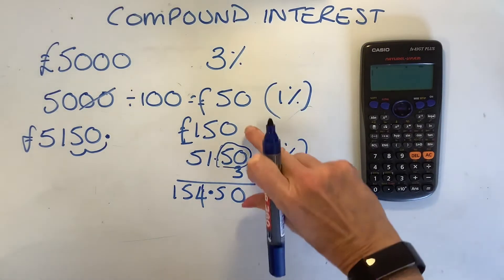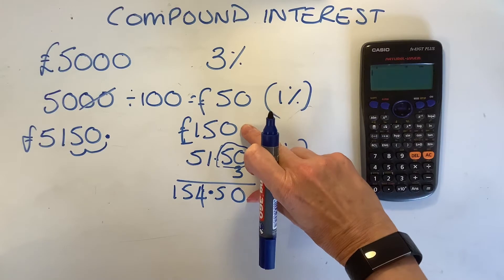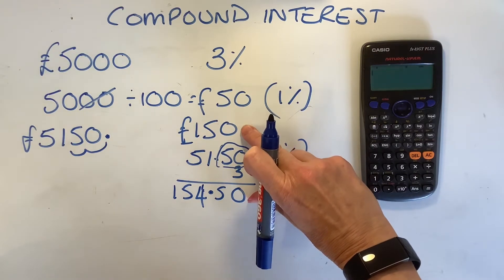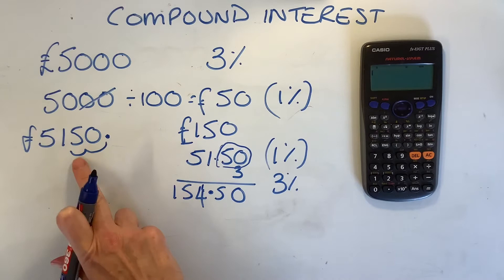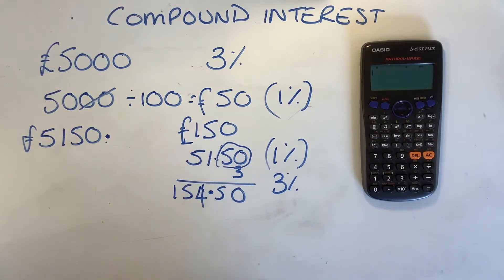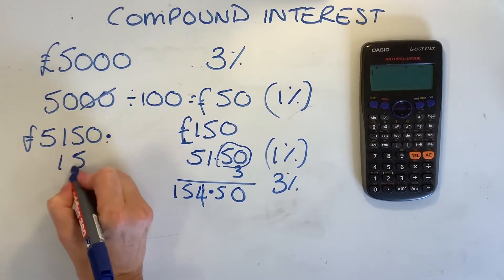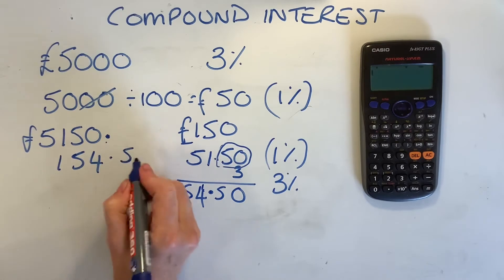You see, it's just a little bit more than the first year, because we're finding 3% of a slightly larger amount. I've now got to add this on to my original amount here.